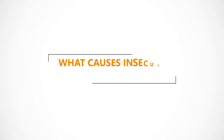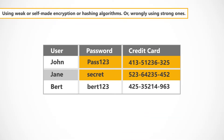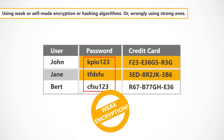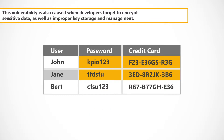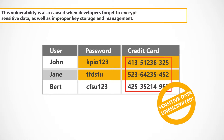What causes insecure cryptographic storage? Typical mistakes include using weak or self-made encryption or hashing algorithms, or wrongly using strong ones. This vulnerability is also caused when developers forget to encrypt sensitive data, as well as improper key storage and management.